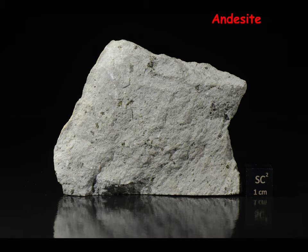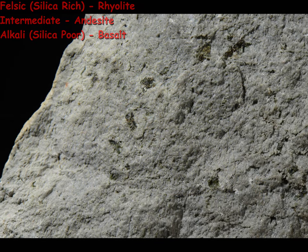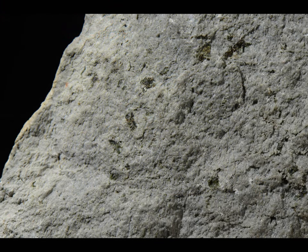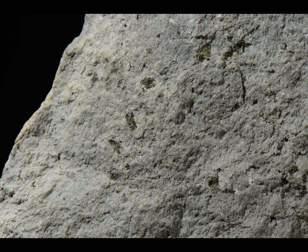Andesite is another extrusive igneous rock that is normally porphyritic. It is considered to be intermediate in composition between the felsic — that is silica-rich — rhyolite, and the alkali — that is silica-poor — basalt. This specimen is from North Mountain, Phoenix, Arizona. It has a very fine groundmass with a few phenocrysts of hornblende. In fact, the presence of these small black hornblende phenocrysts is often used in the field to identify the rock as an andesite.